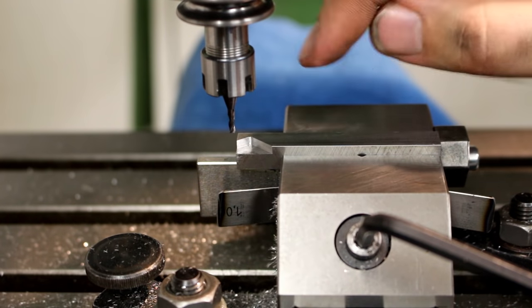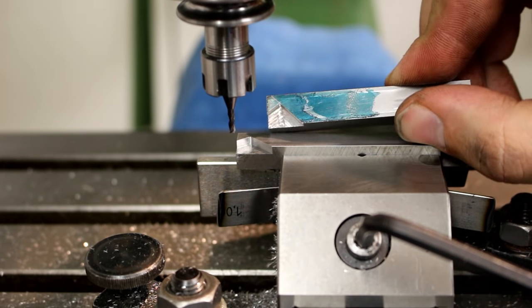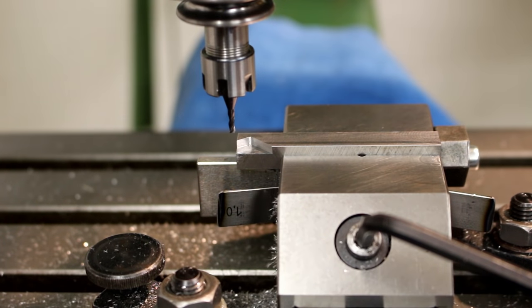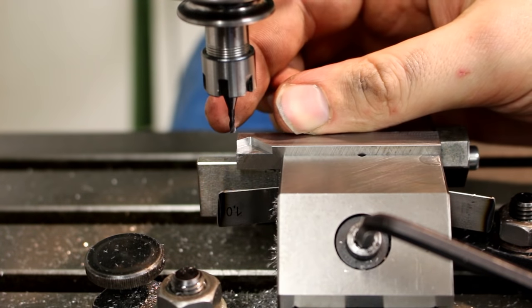I'm over at the Pantograph machine. And I have the first two of the insert holders already cut. And it works very well. I have a two millimeters three flute carbide end mill in here. I'm running it at I think 6000 RPM.